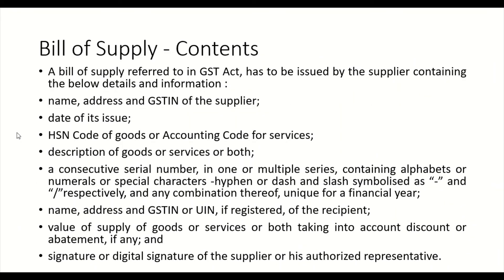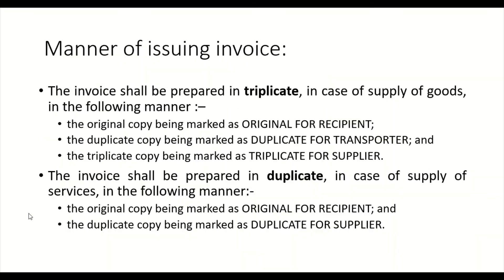Regarding the manner of issuing an invoice: for goods, the invoice should be in triplicate — three copies. The original is given to the recipient, the duplicate copy goes to the transporter, and the triplicate is retained by the supplier. If there is no transporter, only two copies need to be made.